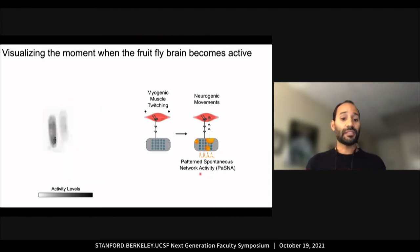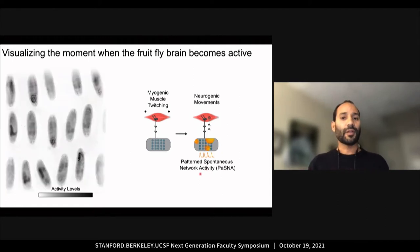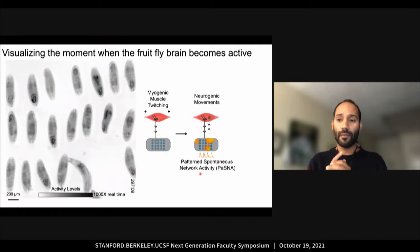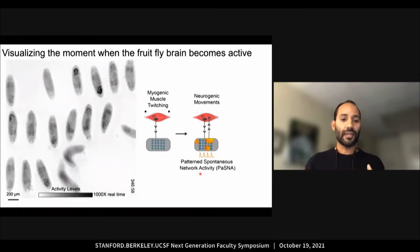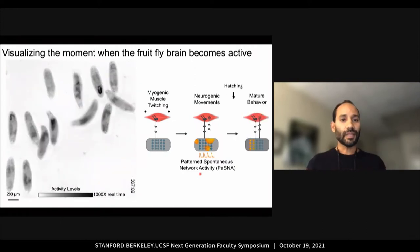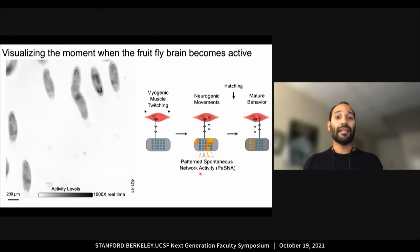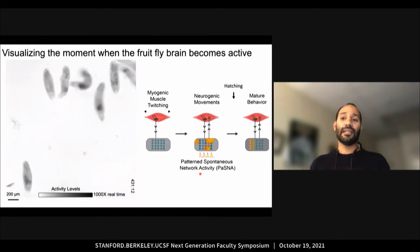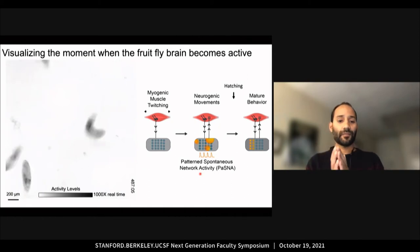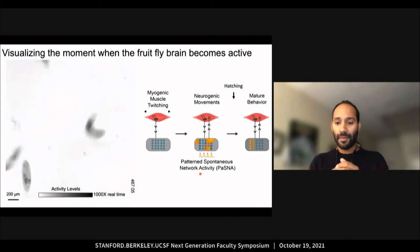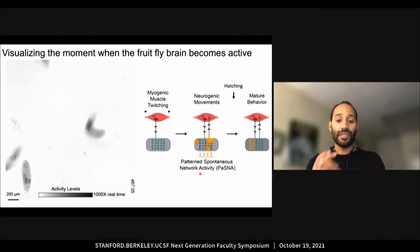With this method, we can reliably record PASNA, not just one embryo, but many embryos in parallel. Embryos survive, letting us capture spontaneous activity from the onset until hatching. Moving forward, this is going to be a really powerful system, as you can rapidly screen for genes and neurons involved in this process.